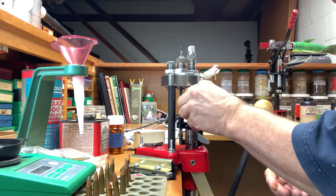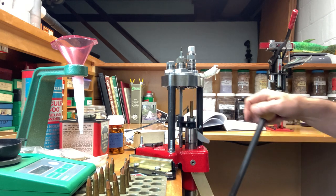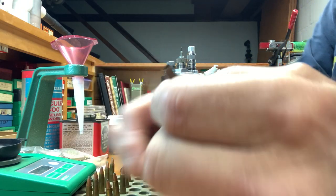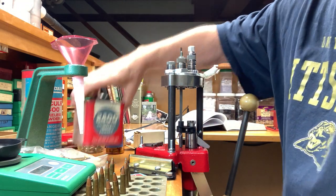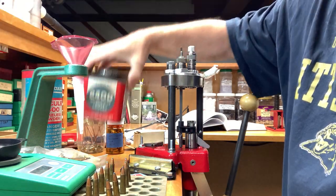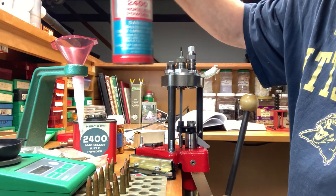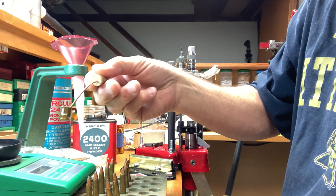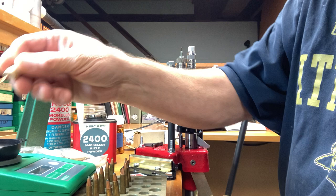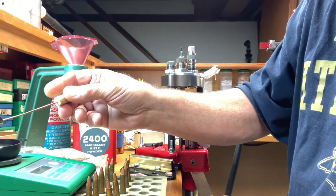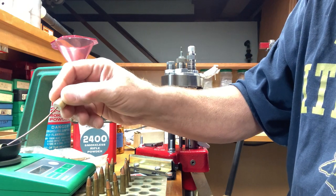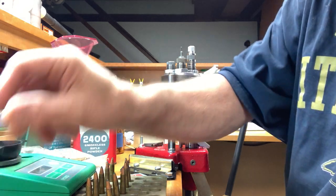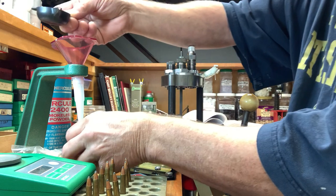Now we're going to bell the case with the Lee universal case belling die, and that just makes it so the bullet sits in there a little better. Yeah, just enough to get her going in there. So now we're to put powder. It's another using up - here's my last of this little can, 2400, that I always overlook. We're looking for nine grains of 2400. Oh, went over a touch but that's okay, we'll get that out of there. Close enough, nine is right on. Okay, we're going to charge this case.